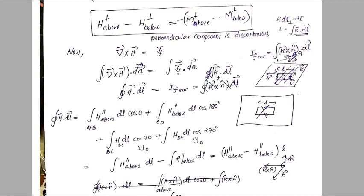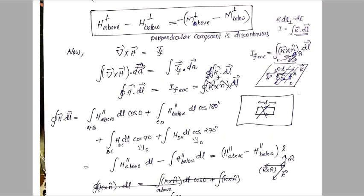We consider a rectangular Amperian loop straddling the boundary. The enclosed current is given by the surface current density K. K is defined as dI by dl, so the enclosed current equals K dot L, which is K times L.